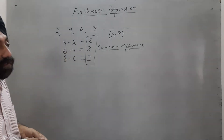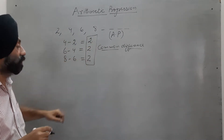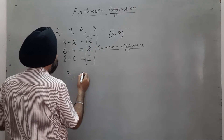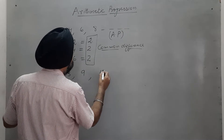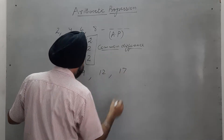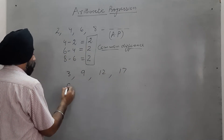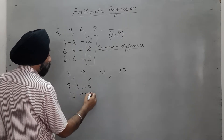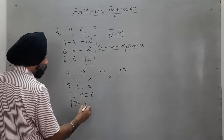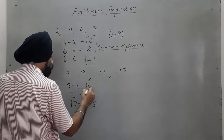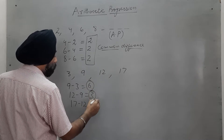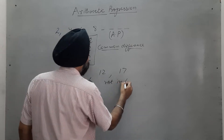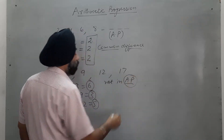Now let us see another example: 3, 9, 12, 17. Here, 9 minus 3 is 6, 12 minus 9 is 3, and 17 minus 12 is 5. The common difference is not constant, so these numbers are not in AP — they don't form an AP.